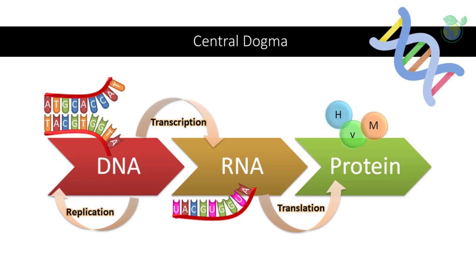Within the cell, key biological processes are governed by the flow of genetic information which is dictated by the central dogma. The biological understanding of the central dogma states that the genetic material DNA is transcribed to RNA, which is translated to proteins.